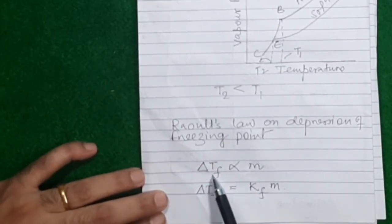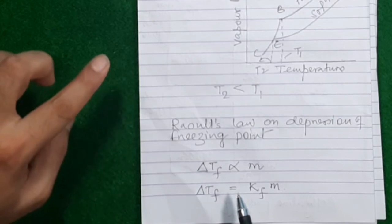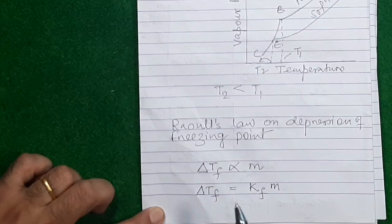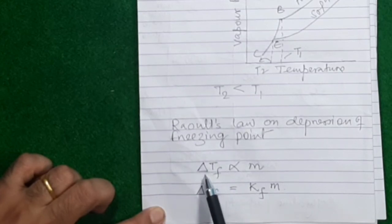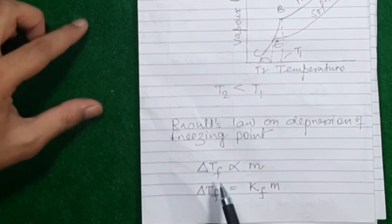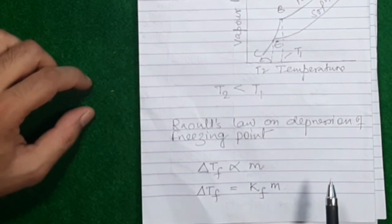Now there is Raoult's law on this phenomenon of depression of freezing point. According to Raoult's law, depression of freezing point of any liquid in its solution containing non-volatile, non-electrolyte solute is directly proportional to the molality — exactly like Raoult's law on elevation of boiling point. Remember, delta Tf is neither the freezing point of the pure liquid nor that of the solution — it is the amount by which the freezing point has gone down.